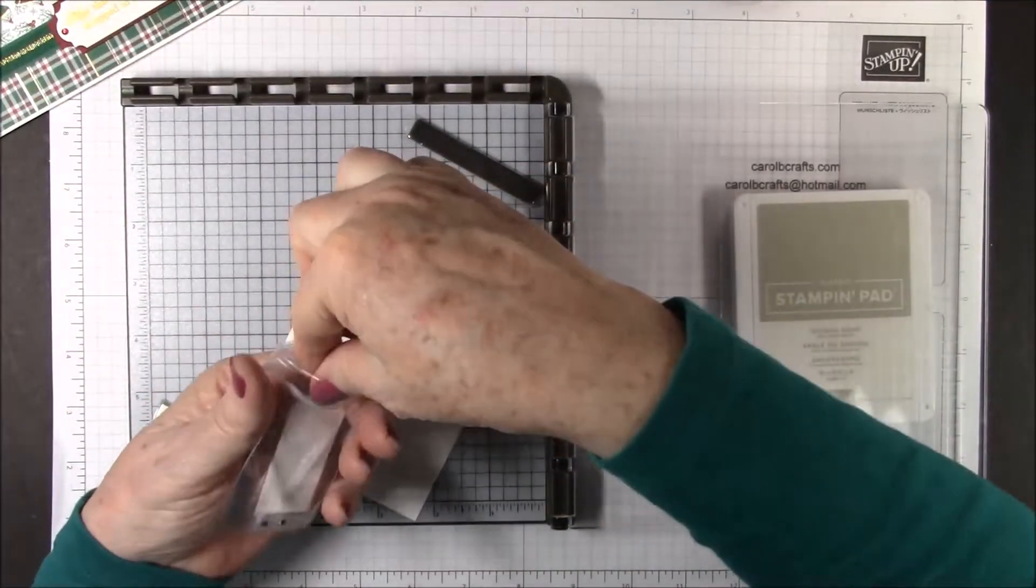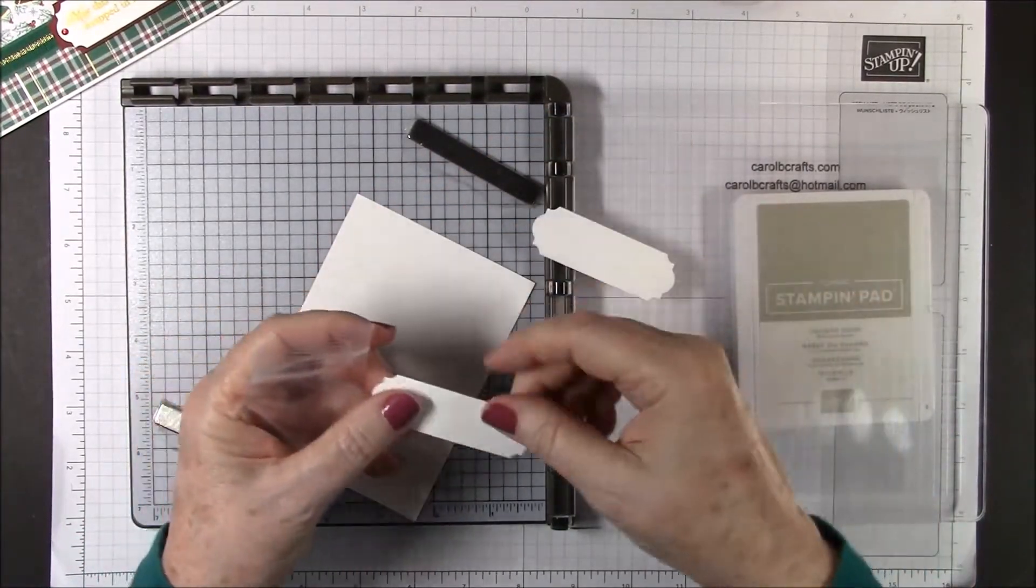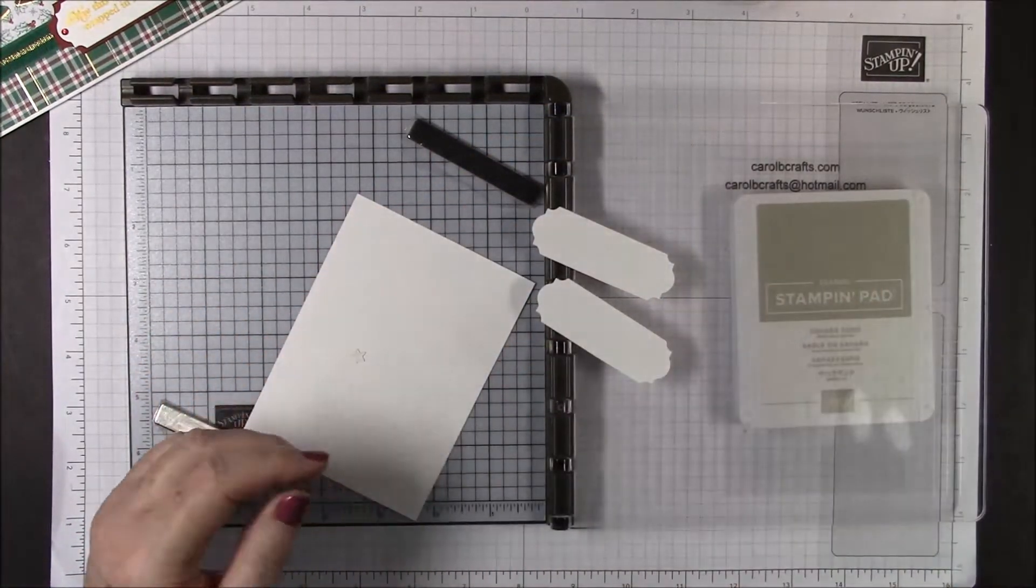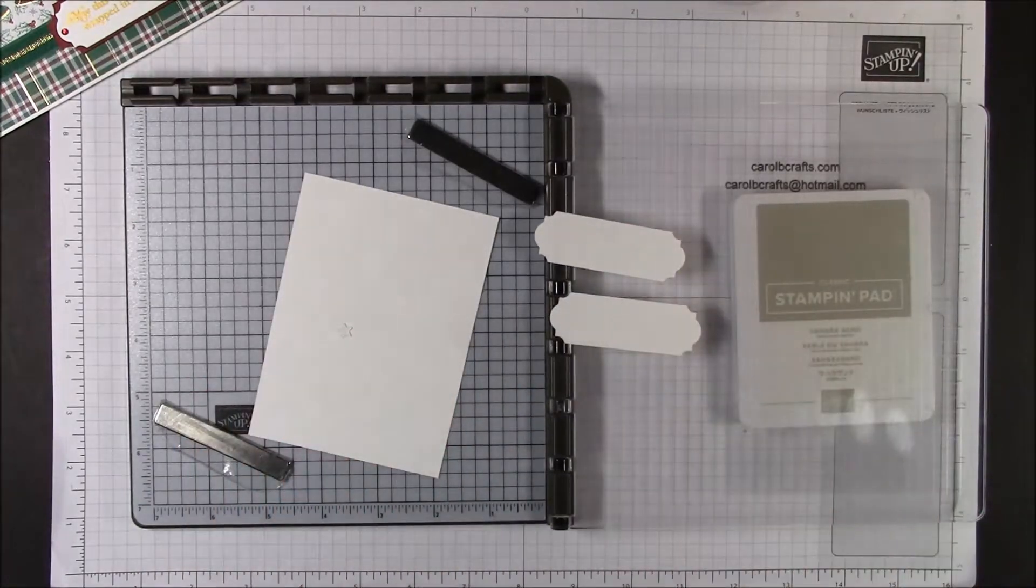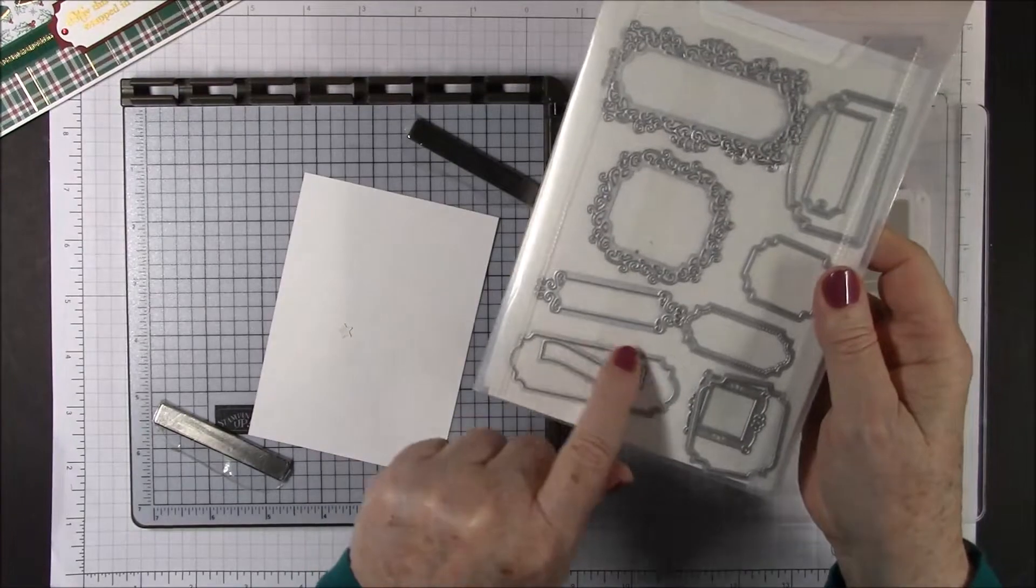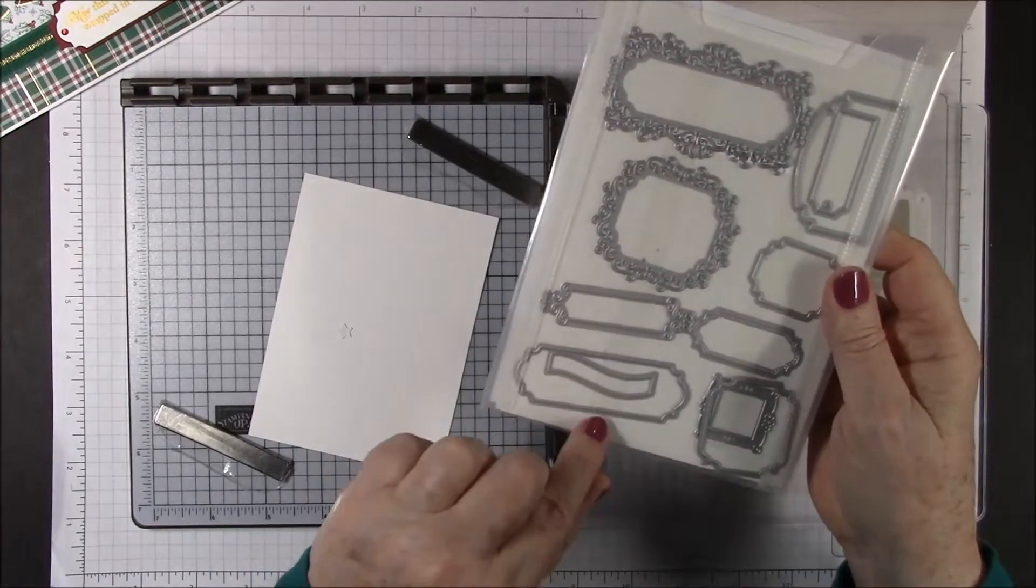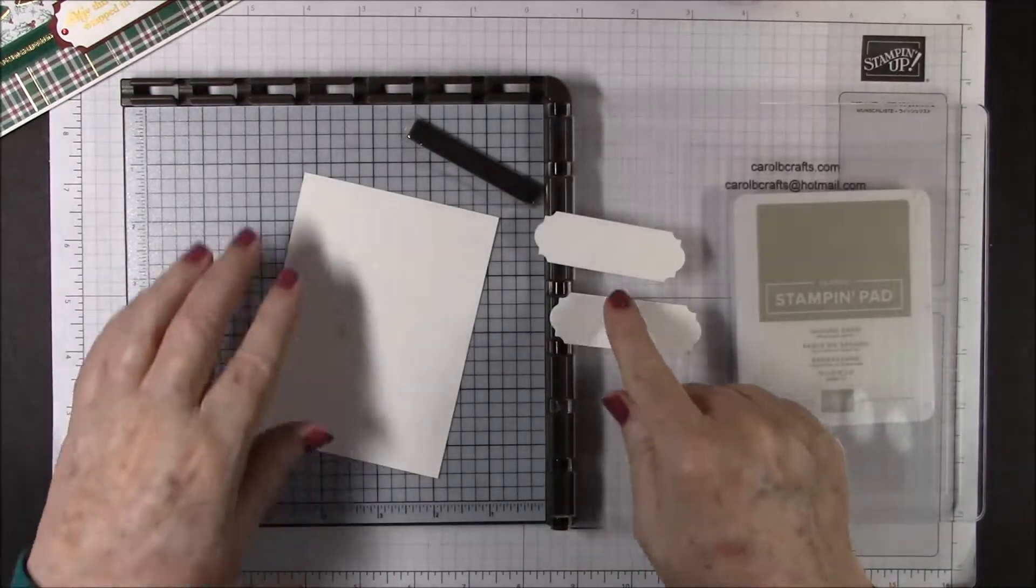From your kit you're going to want to get your whisper white label. I give you two; you only need one. This label is die cut from the ornate frames dies, this die right here. This comes as a bundle right now with the monster bash stamps.